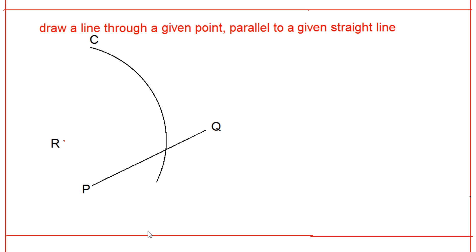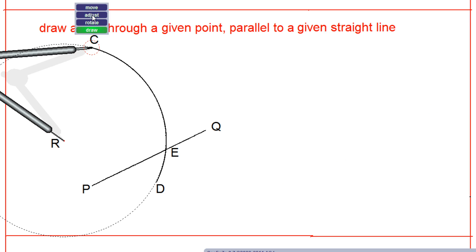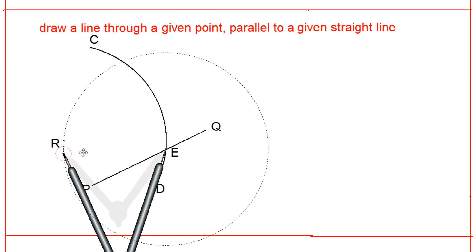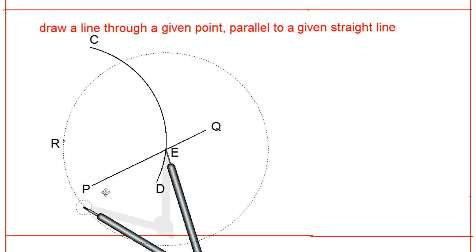Now with the same radius, basically without changing the radius, you just bring this compass at point E. Now rotate it, go to on the other side, and draw an arc.